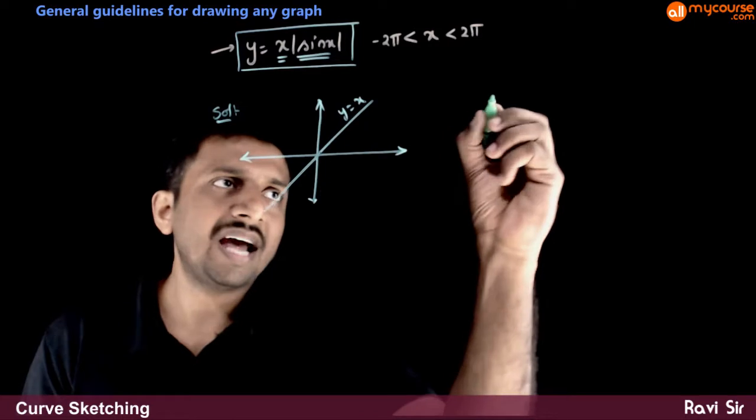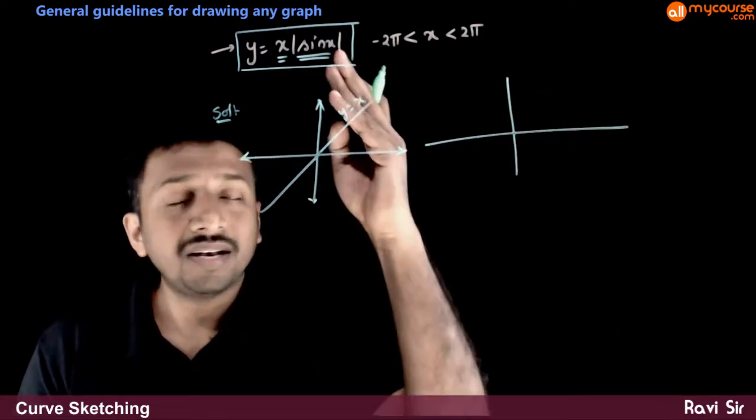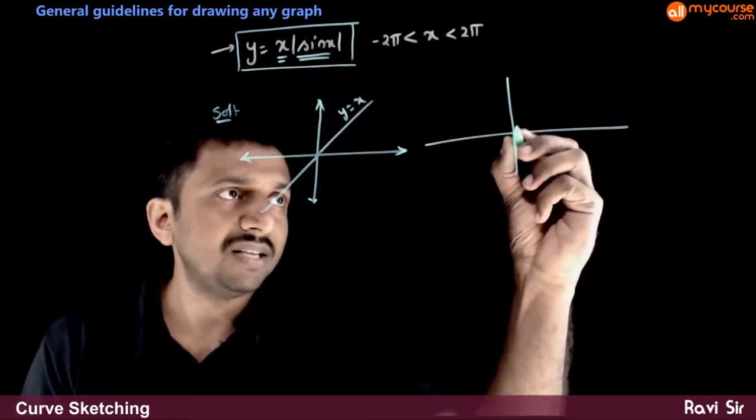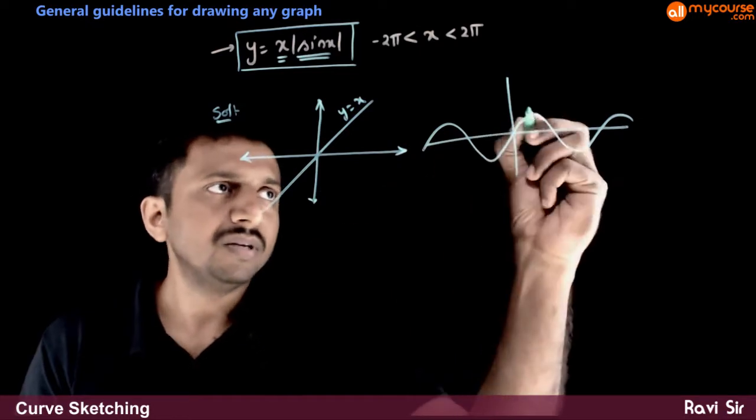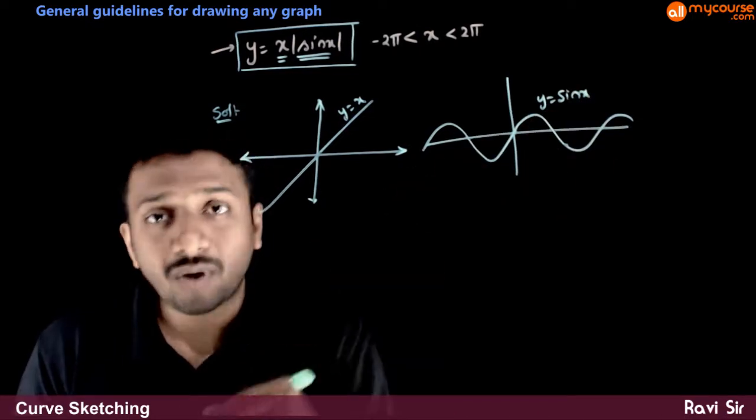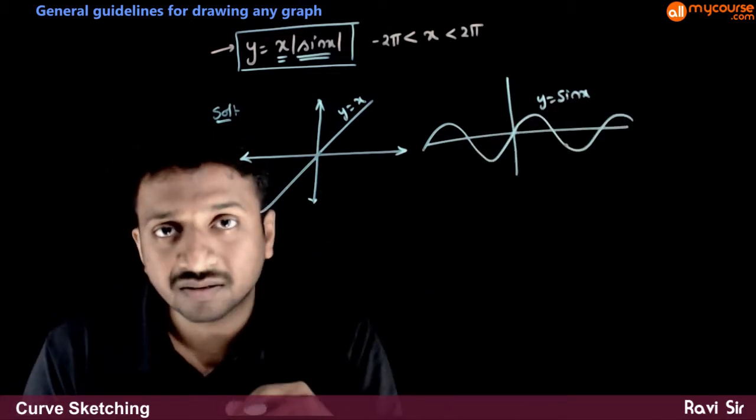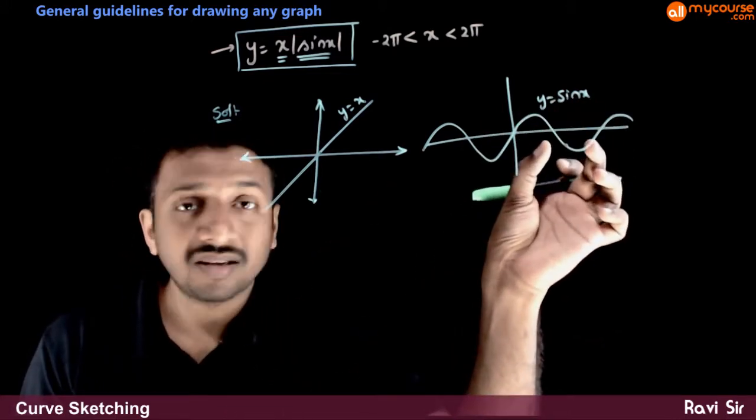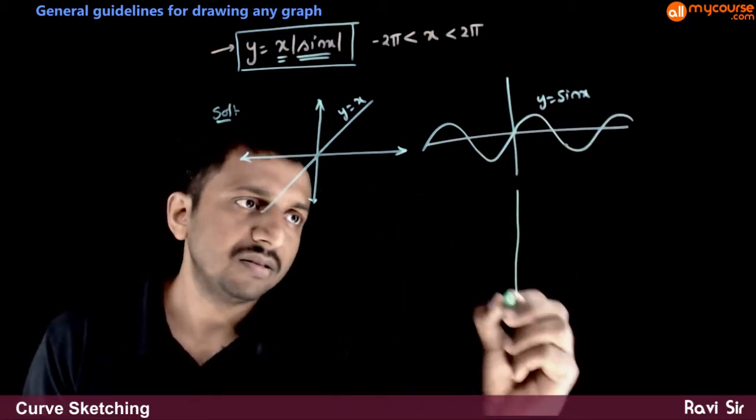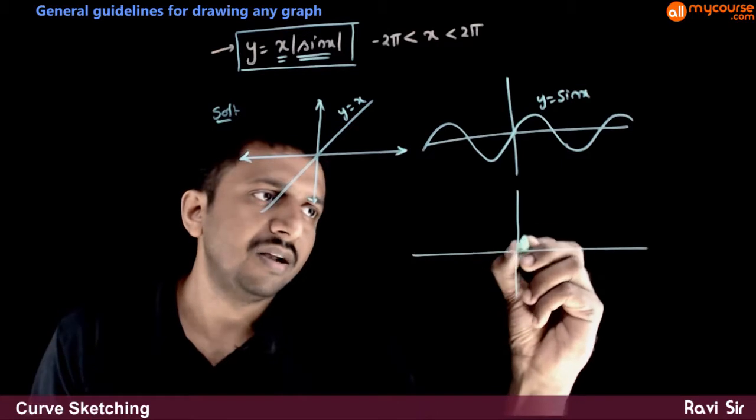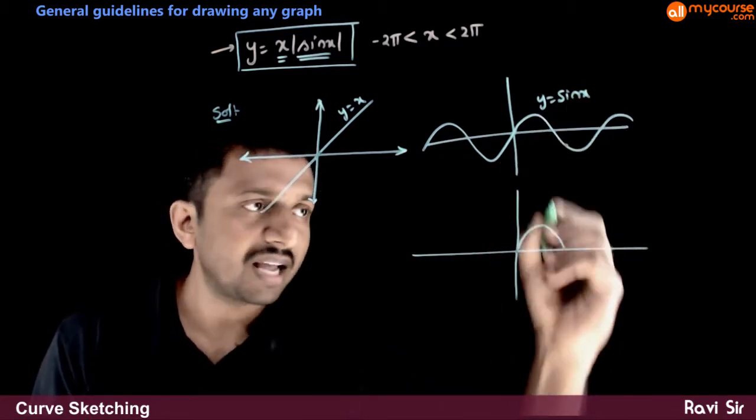And what is the graph of y equals mod sin x? You know the graph of y equals sin x. We have already seen what happens if you put y equals mod f of x. The curve that is below x-axis will get flipped to above x-axis. So mod sin x looks something like this. This graph remains same. This graph gets flipped.